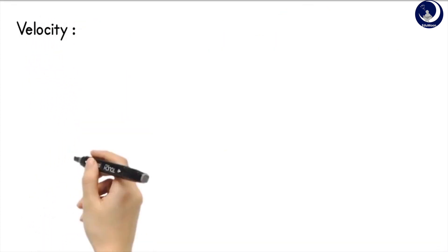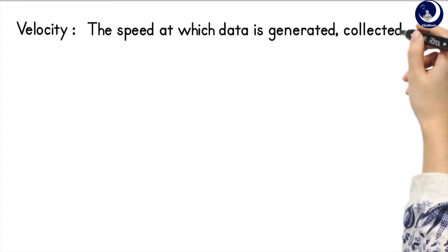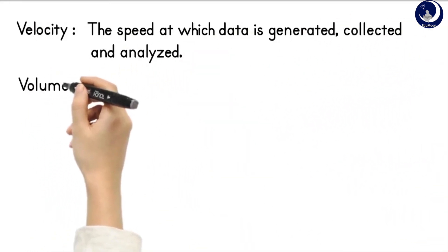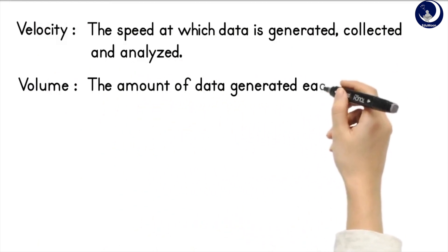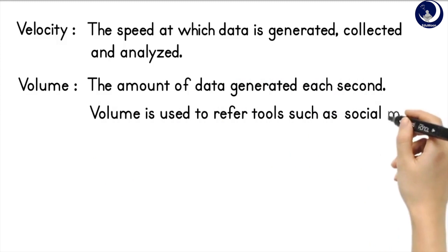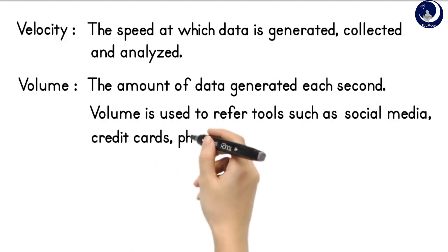Velocity: The speed at which data is generated, collected and analyzed. Volume: The amount of data generated each second. Volume is often used in reference to tools such as social media, credit cards, phones, photographs.